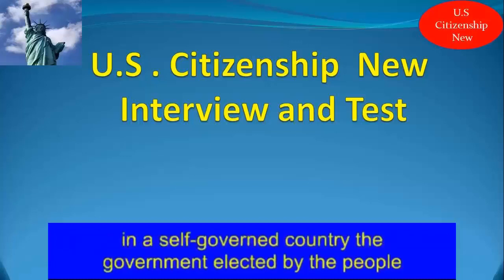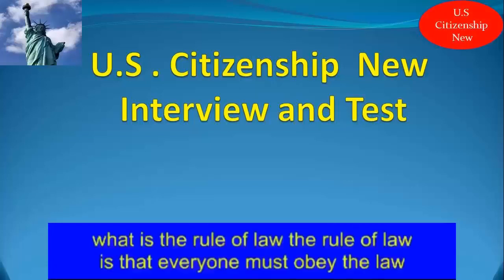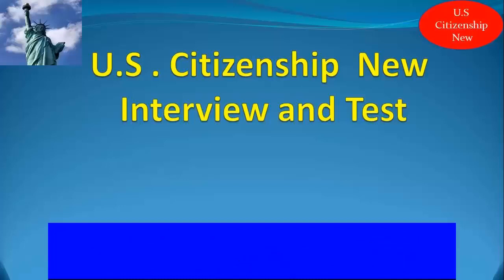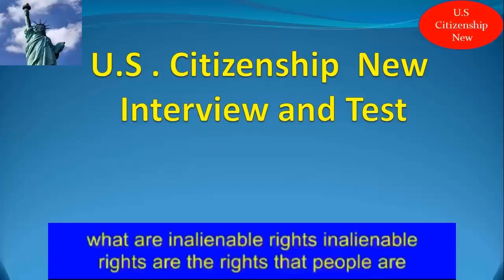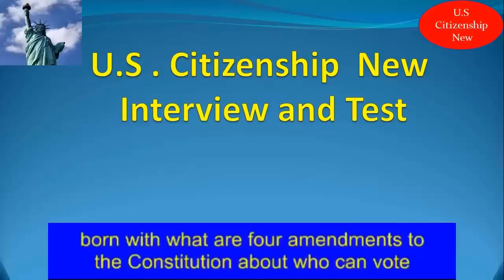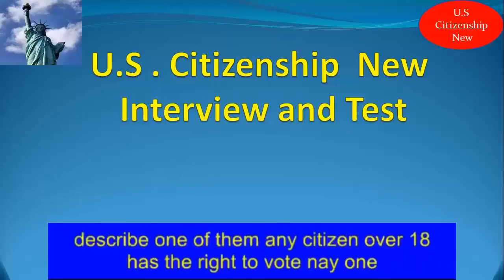Who governs the people in a self-governed country? The government elected by the people. What is the rule of law? The rule of law is that everyone must obey the law. What are inalienable rights? Inalienable rights are the rights that people are born with. What are four amendments to the Constitution about who can vote? Any citizen over 18 has the right to vote.